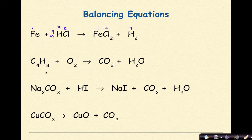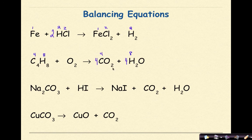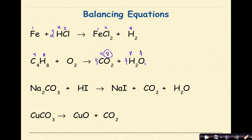A combustion reaction is next: butane plus oxygen gives carbon dioxide and water. There's a specific way to balance combustion reactions — always start with carbons first. I have 4 carbons, so I put a 4 in front of CO2. Then hydrogens: 8 hydrogens as reactants, so I put a 4 in front of H2O — 4 times 2 gives 8. Now balance oxygens: 4 times 2 is 8, plus 4 from H2O, gives 12 total — so 6 times 2 equals 12. The combustion reaction is balanced.